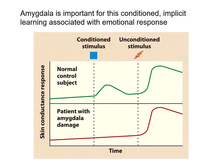Looking at fear conditioning data in humans — specifically increases in skin conductance in response to conditioned and unconditioned stimuli — unlike control subjects, the patient with amygdala damage showed no response to the blue square (conditioned stimulus) after training. She did respond to the shock (unconditioned stimulus) the same amount as controls. This means conditioning something to an aversive event is really made responsible by the amygdala — its emotional aspect of learning, especially fear conditioning.